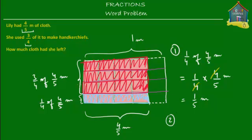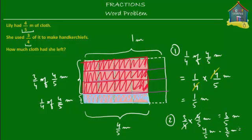The second method is to find out how much cloth she used for making handkerchiefs. She used three-fourths of four-fifths meters. So what she actually used was three-upon-five meters of cloth to make handkerchiefs. If she used three-upon-five meters and when she started she had four-fifths of a meter, then how much did she have remaining? All that she had remaining was four-fifths of a meter minus three-fifths of a meter, which equals one-fifth of a meter. So you still get the same answer no matter which method you use — it's totally up to you which one you prefer.